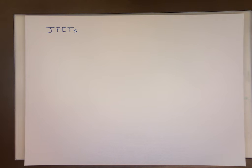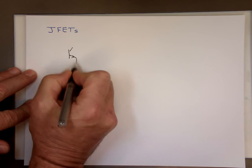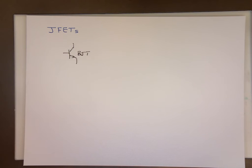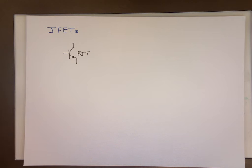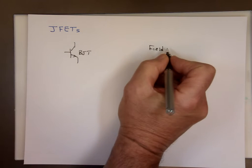From the previous videos, we talked about bipolar junction transistors — the normal transistor, the NPN type. Those are bipolar junction transistors. This type is called bipolar because it uses two types of charges: free electrons and holes. Now the one we're going to be looking at today is FET, which stands for field effect transistor.